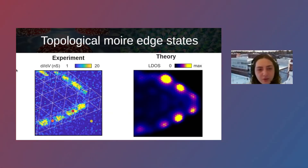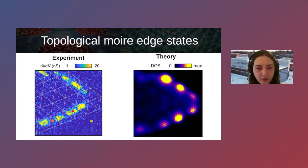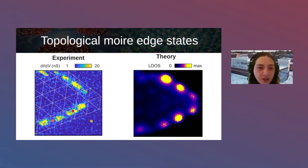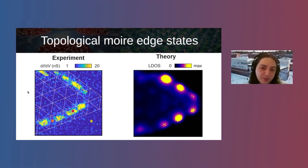To summarize the first part: in the CrBr₃/NbSe₂ heterostructure, the moiré pattern clearly modulates the electronic structure. From theory, moiré patterns increase the phase space in which topological superconductivity can be obtained. In short, moiré patterns in these materials can be a very powerful way to drive systems towards the topological superconducting regime.